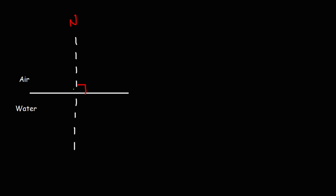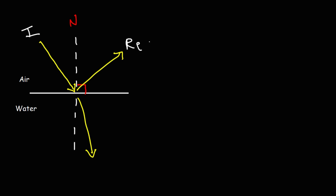When a light ray strikes the point of incidence, three things could happen: the light ray can reflect at the boundary, it can refract, or it could be absorbed by the material. This is known as the incident ray, this is the reflected ray, and the one on the bottom is the refracted ray.